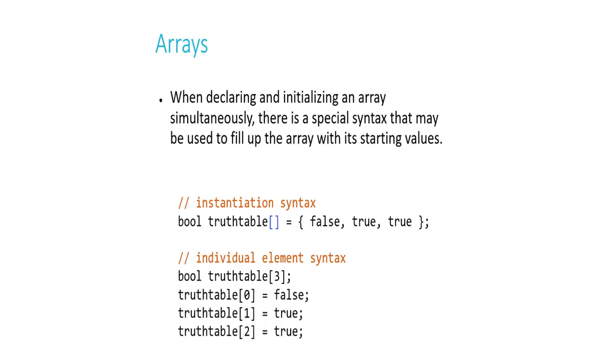Notice that in between the square brackets this time, the number has been omitted. If you're using this special instantiation syntax to create an array, you actually don't need to indicate the size beforehand. The compiler is smart enough to know you want an array of size 3 because you put 3 elements to the right of the equal sign. If you had put 4, it would give you a truth_table of size 4, and so on.